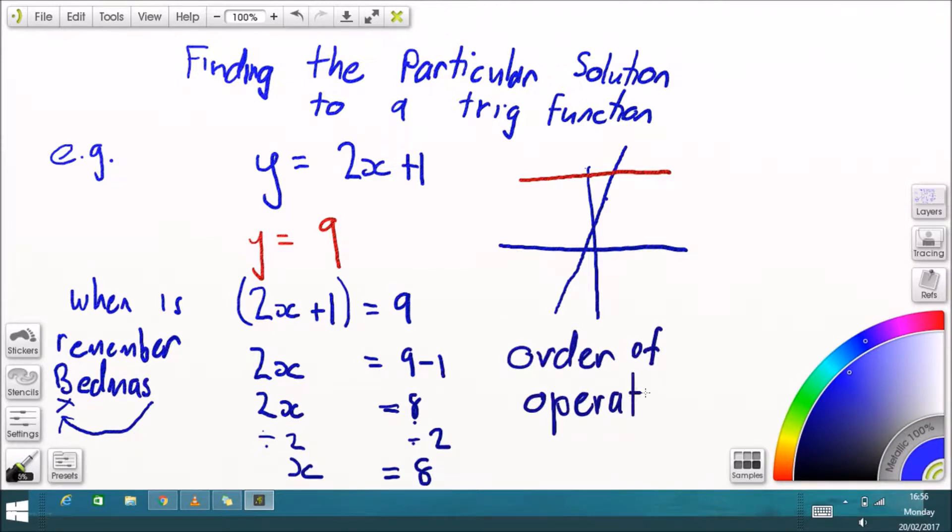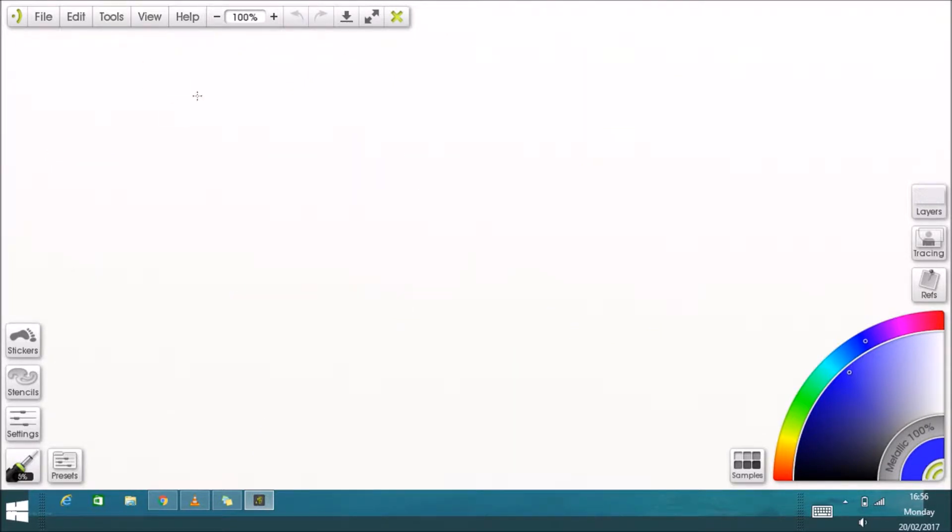All you have to do is remember your order of operations. There's nothing more to it than that, and then you work backwards. So that's why we did the plus first and then we got rid of the multiply by 2.